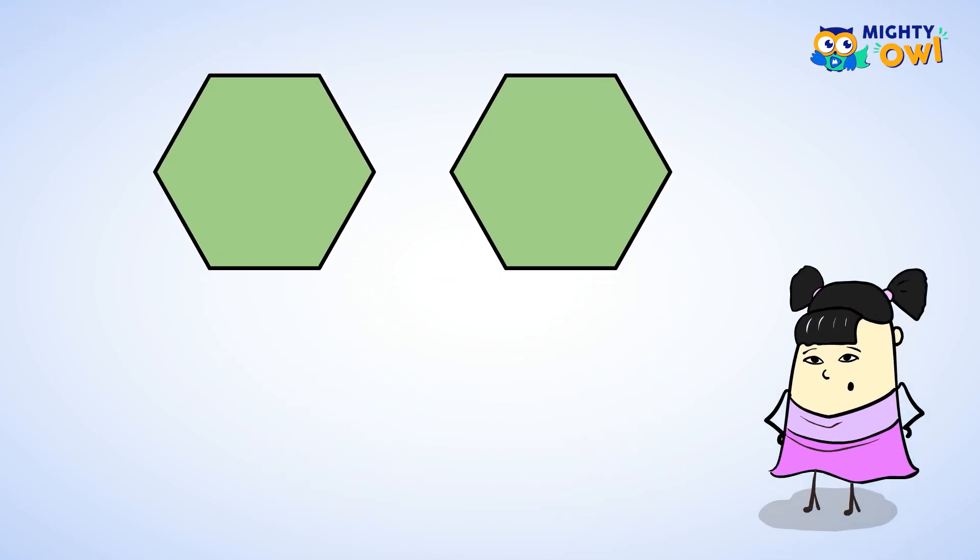Now we have two hexagons. Each hexagon has one part. This means that our numerator is two, since two parts are shaded, and our denominator is one, since there is one part to the whole. We just wrote the number two as a fraction.